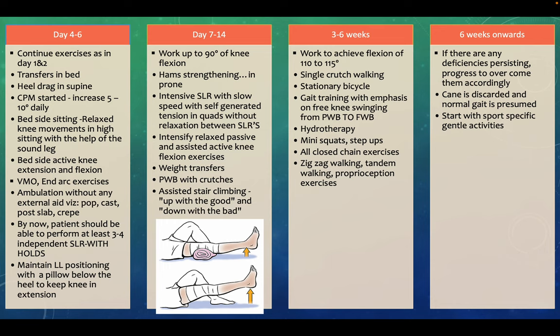Days 4 to 6: continue exercises from Day 1 and 2, add heel drag in supine, bed transfers, and CPM is started — increasing by 5 to 10 degrees each day. Bedside sitting with relaxed knee movements and high sitting with the help of the sound leg is introduced. Bedside active knee extension and flexion, VMO and quad exercises are progressed. By this point the patient should perform at least 3 to 4 independent SLRs with holds.